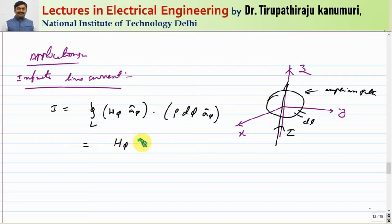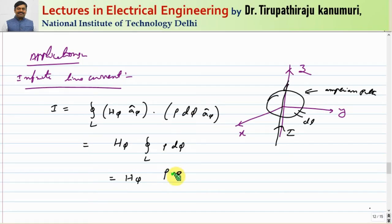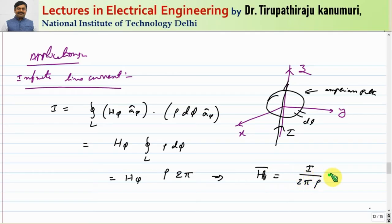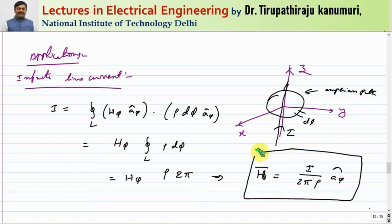The current I equals the closed line integral of H in the phi direction dot dl, where dl equals rho d-phi in the a-phi direction. Only that directional component will remain; the rest cancels out. This becomes H_phi times the integral of rho d-phi, which equals H_phi times rho times 2-pi. From this, H equals I divided by 2-pi-rho in the direction of a-phi. This is the magnetic field due to an infinite line current.